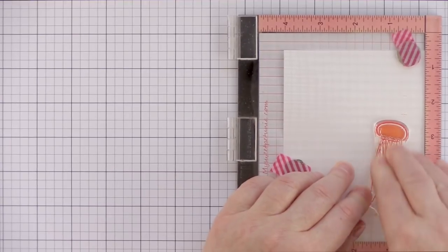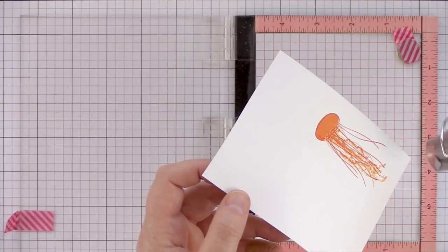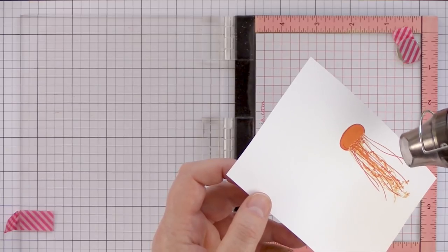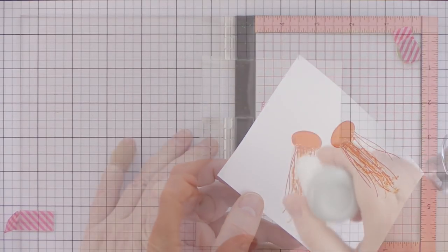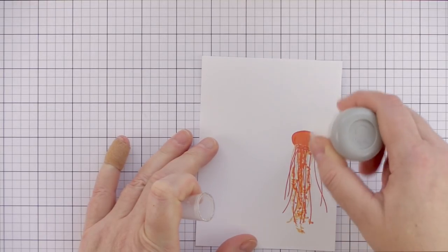I've been using my heat tool to dry the stamped image before moving onto the next layer. This is particularly important now as I want to heat emboss the final layer of the jellyfish, and I don't want any embossing powder to stick where I don't want it to on the areas of the jellyfish which are still damp.